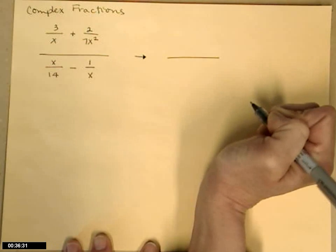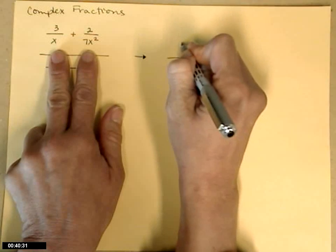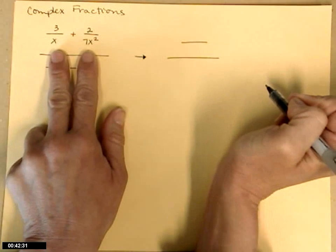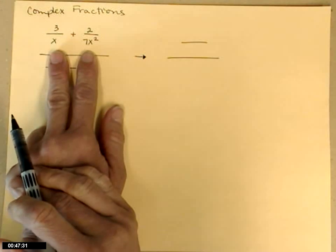The first method is to add the two fractions in the numerator by getting a common denominator. Looking at the top part of this fraction, the denominators are x and 7x squared.